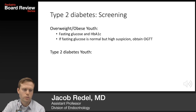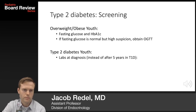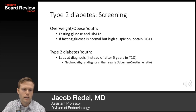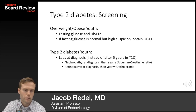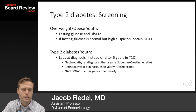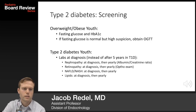In type 2 diabetes, we screen for comorbidities at the time of diagnosis — in contrast to type 1, where some screenings can wait three to five years. We screen for nephropathy at diagnosis and annually using urine microalbumin or albumin-to-creatinine ratio. We screen for retinopathy with an annual ophthalmology retinal exam. We screen for NAFLD and NASH at diagnosis and yearly, and check lipids for dyslipidemia at diagnosis and annually, given the association with microvascular complications and cardiovascular risk.